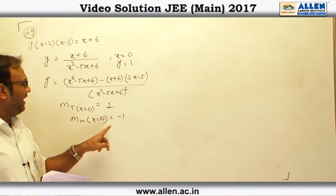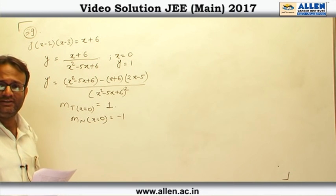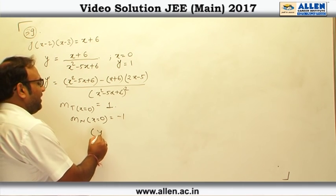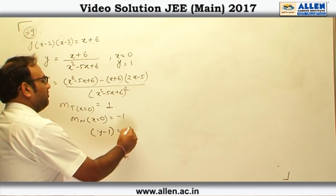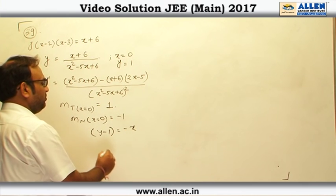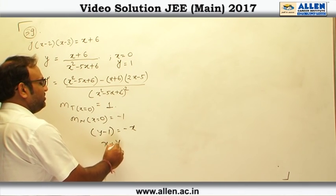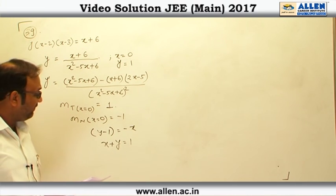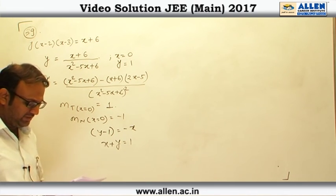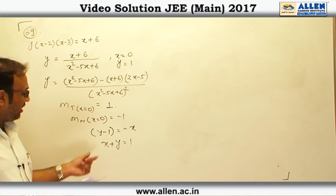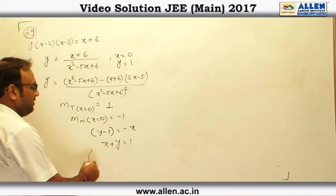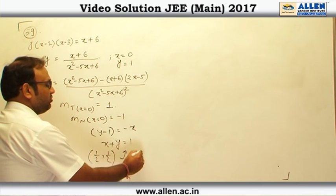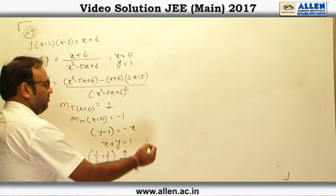We have got the point and we have got the slope of the normal. So we can easily write the equation of the normal, and the equation is y minus 1 equals to minus of x minus 0. So that makes it x plus y is equal to 1. This is the required normal and out of the given options, we just put and check which of the following is lying on this. One-half comma one-half obviously lies on this, and therefore the correct answer is answer number 3.